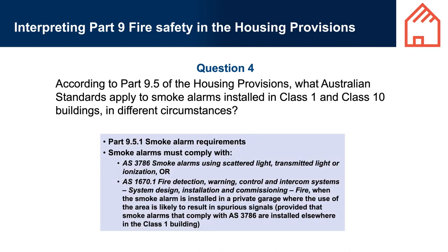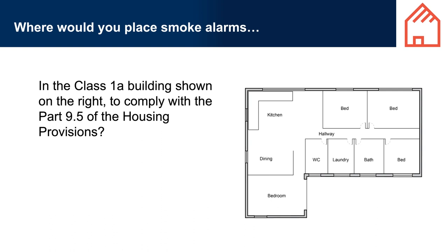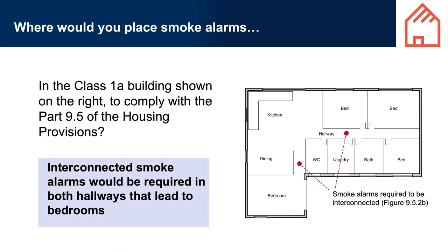Where would you place smoke alarms in a Class 1a building to comply with Part 9.5 of the Housing Provisions? Interconnected smoke alarms would be required in both hallways that lead to bedrooms.